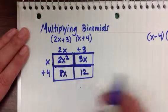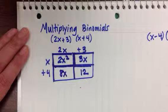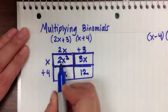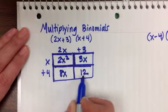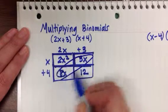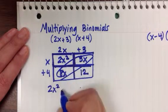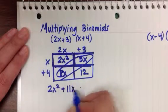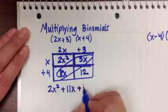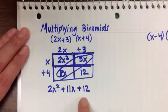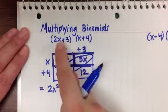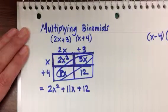What do we do with all these terms now that we have them? We combine like terms, and then we'll be done with the problem. So we look, do we have any like terms in all of these? 2x squared stands alone. 8x and 3x together combine to give me 11x, and the 12 also stands alone. So here is my new trinomial, 2x squared plus 11x plus 12. It is the answer to multiplying these binomials.